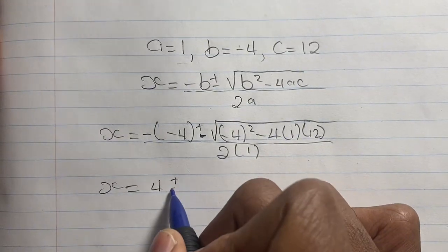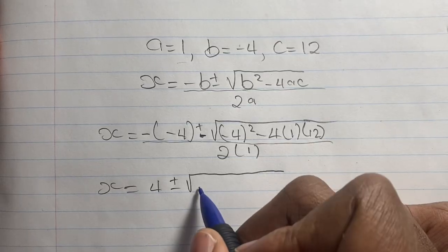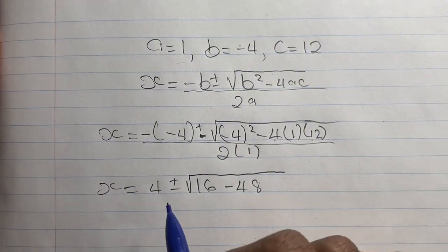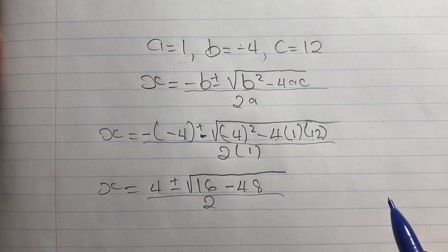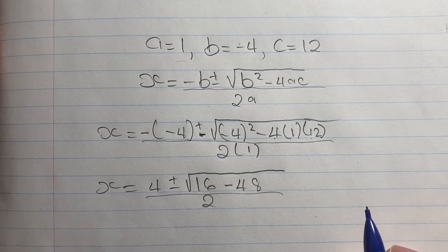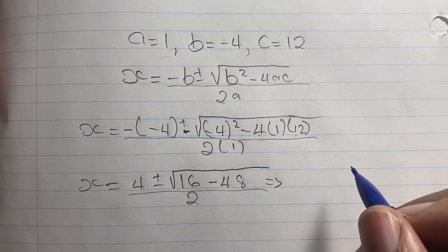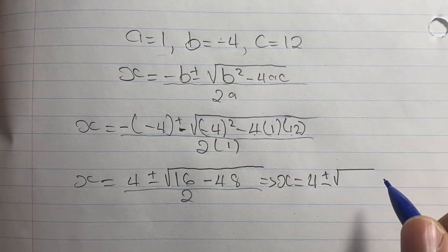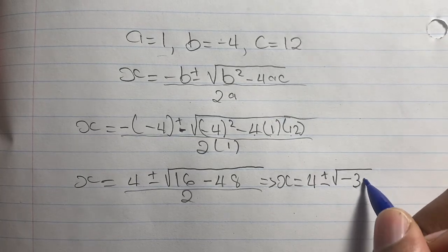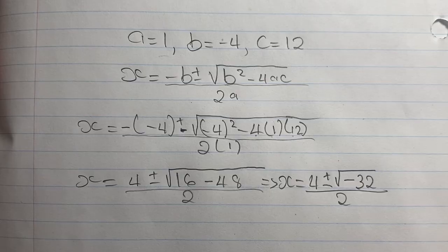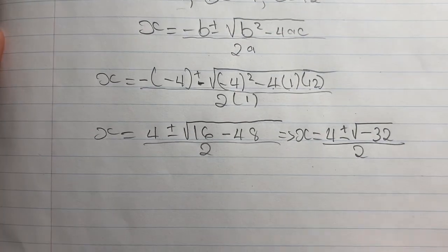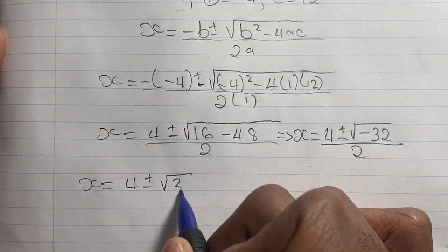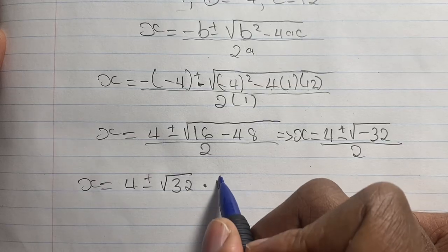Simplifying, negative times negative gives positive, so we have 4 plus or minus the square root of (16 minus 48), all over 2. That gives us 4 plus or minus the square root of negative 32, all over 2. We can rewrite this as 4 plus or minus the square root of 32 times the square root of negative 1, all over 2.